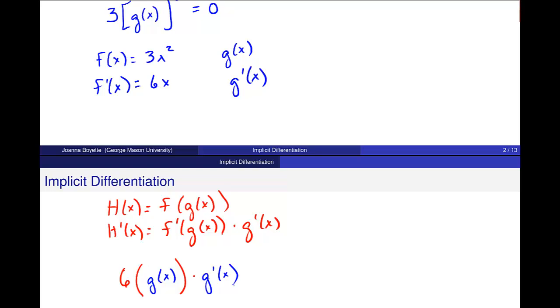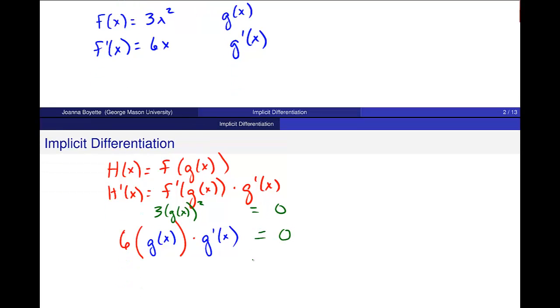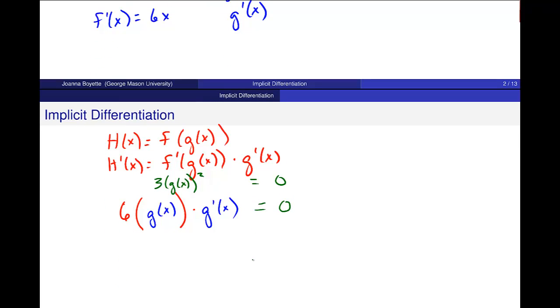So, here in these steps, I'm going from 3 g of x squared. And then I take the derivative. And really, I have that equal to 0. I just take the derivative of the right side also. The derivative of 0 is 0. And I get something that looks like this.